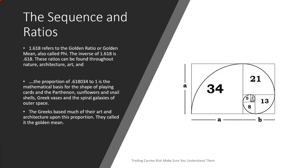These numbers and ratios can be found all through nature — they have nothing to do with finance or Forex and have been around before those were. The Greeks used these numbers to build the Parthenon, and these ratios can still be found in Greek vases, spirals of the galaxy. It's said that the human face is more attractive when it's closer to these ratios — when your nose, ears, mouth, and eyes fit these ratios more precisely, for some reason the face is more attractive to other human beings. The Greeks based most of their art and architecture on these proportions and called it the golden mean.